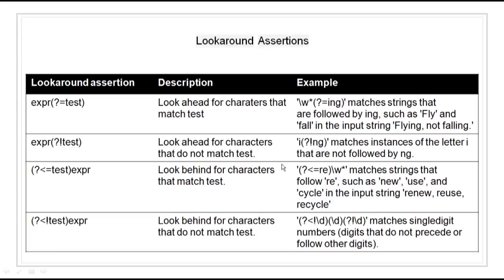Now, look around assertions look for string patterns that immediately precede or follow the intended match, but they are not part of the match. The pointer remains at the current location and the characters corresponding to the test expression are not captured or discarded. Therefore, look ahead assertions can match overlapping character groups. We have (?=test) for look ahead matching, (?!test) for look ahead non-matching, (?<=test) for look behind matching, and (?<!test) for look behind non-matching.